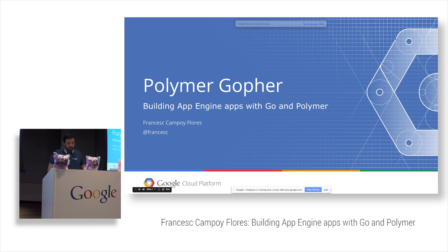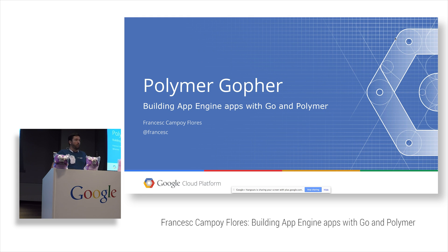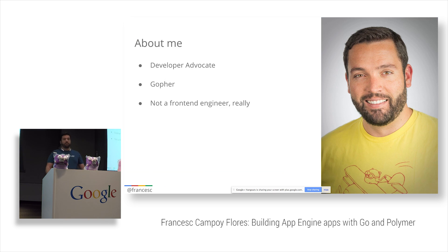I'm Francis Campoy, and today I'm going to be talking about Polymer Gopher. That's a very awesome name. It's basically about building web apps on App Engine with both Go and Polymer. A little bit about myself: I'm a developer advocate for the Google Cloud Platform, but I joined the developer relations team to work with the Go team specifically. I'm a gopher.